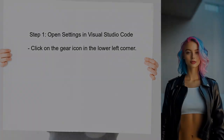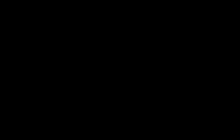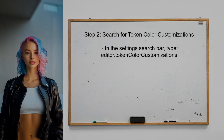To disable italic syntax highlighting in Visual Studio Code, first open the settings. This can be done by clicking on the gear icon in the lower left corner of the window. Next, search for the specific setting related to italic formatting. In the search bar, type editor.tokenColorCustomizations.